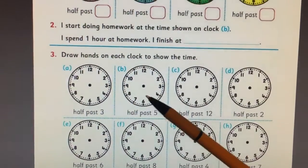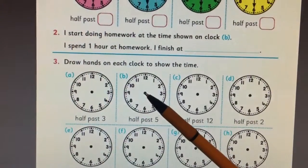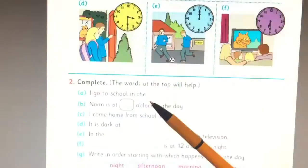Half past five. Look at this. Big hand will go to six. Small hand will be between five and six.